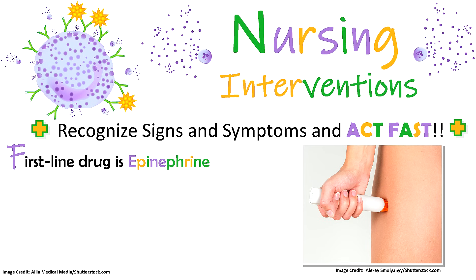F stands for first-line drug: epinephrine. This is the key drug to remember for anaphylactic shock. It can be administered IM or subcutaneously, and the dose can be repeated if needed. In severe cases with severe hypotension in a hospital setting, IV epinephrine may be given. Epinephrine causes vasoconstriction to help increase blood pressure, reduces swelling, and causes bronchodilation to open those narrowed airways.